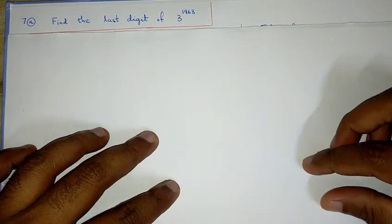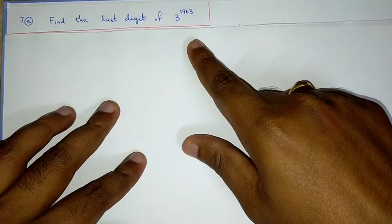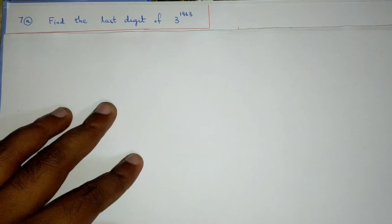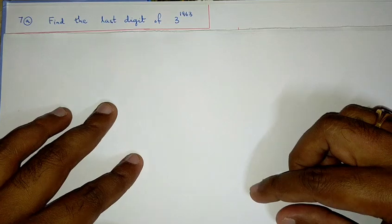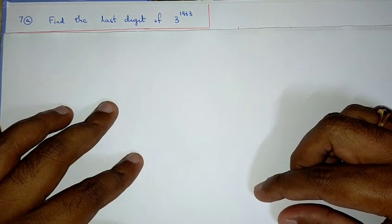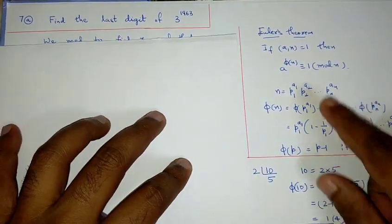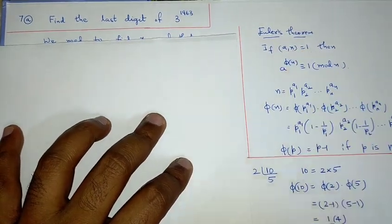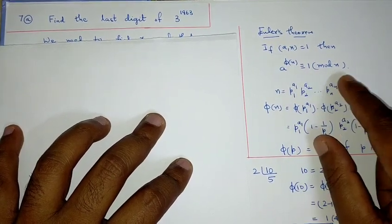Let us solve the next question: find the last digit of 3 power 1963. We have to multiply 3 a total of 1963 times and find the last digit. We can make use of Euler's theorem here. If a and n are relatively prime, meaning gcd(a, n) = 1, then by Euler's theorem: a^φ(n) ≡ 1 (mod n).